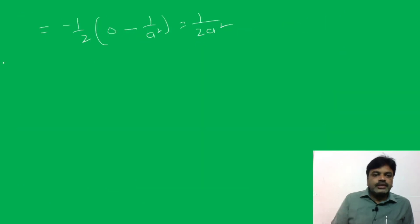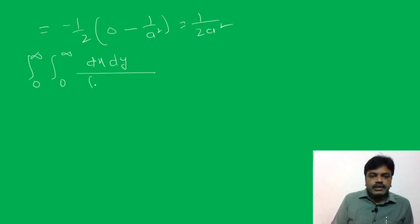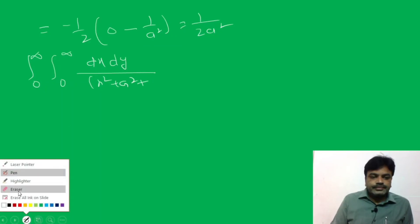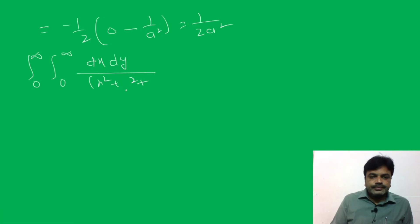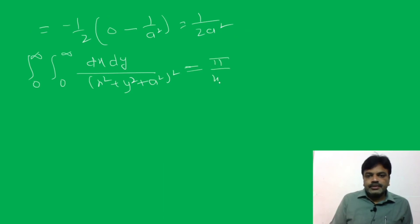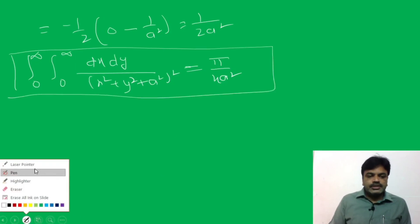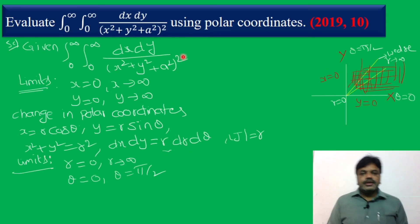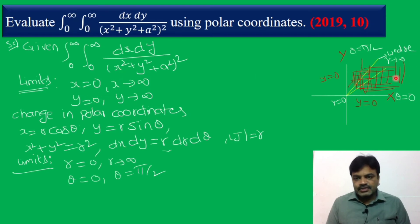Finally, the integral from 0 to infinity, integral from 0 to infinity of dx dy upon (x² + y² + a²)² equals π/(4a²).